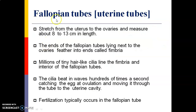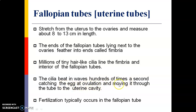The fallopian tubes stretch from the uterus to the ovaries and measure about 8 to 13 centimeters in length. The ends of the fallopian tube lying next to the ovaries feather out into structures called the fimbria. Millions of tiny hair-like cilia line the fimbria and the interior of the fallopian tube. The cilia beat in waves hundreds of times a second, catching the egg at ovulation and moving it through the tube toward the uterine cavity.